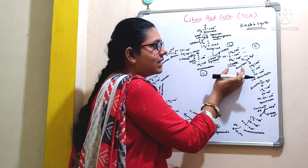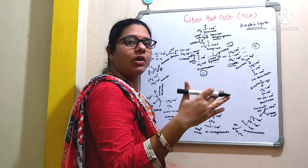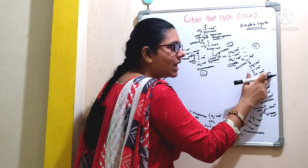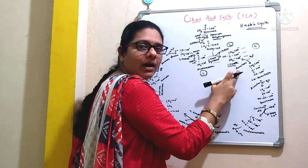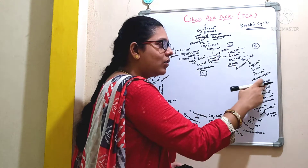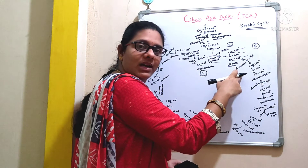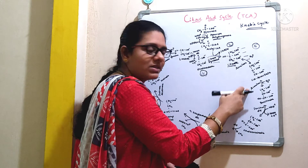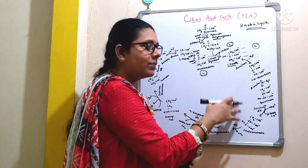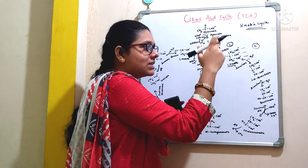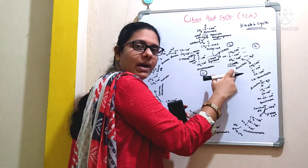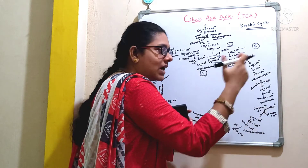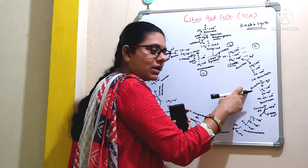The second important step of the TCA cycle is dehydration — removal of a water molecule. With the removal of a water molecule from the citrate, it leads to formation of another intermediate called cis-aconitate, and this reaction is catalyzed by an enzyme called aconitase. This so-formed cis-aconitate will again undergo the process of hydration, taking up one water molecule under the influence of the same enzyme aconitase, giving rise to isocitrate, which is an isomerization step.